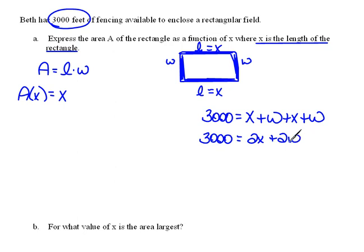Now, if we solve this for W, we can replace that in our area formula. So if I move the 2X over, we get 3,000 minus 2X equals 2W. And then dividing both sides by 2, we would get 1,500 minus X equals W.